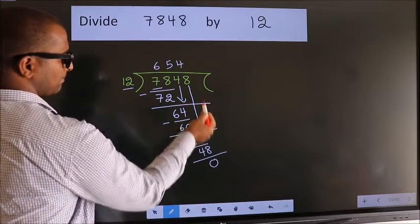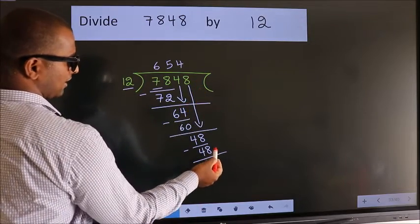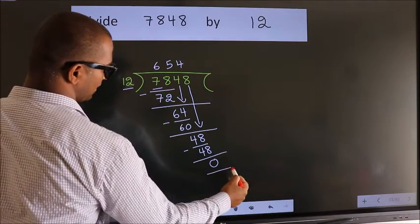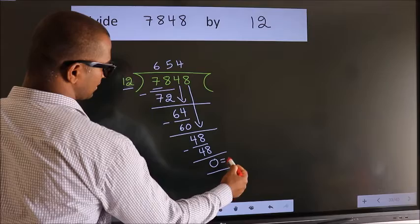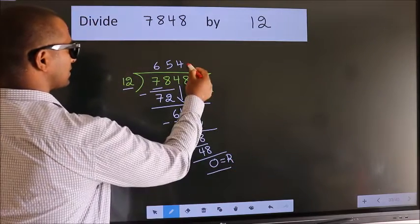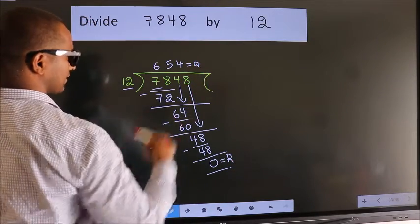There are no more numbers to bring down, so we stop here. This is our remainder, and this is our quotient.